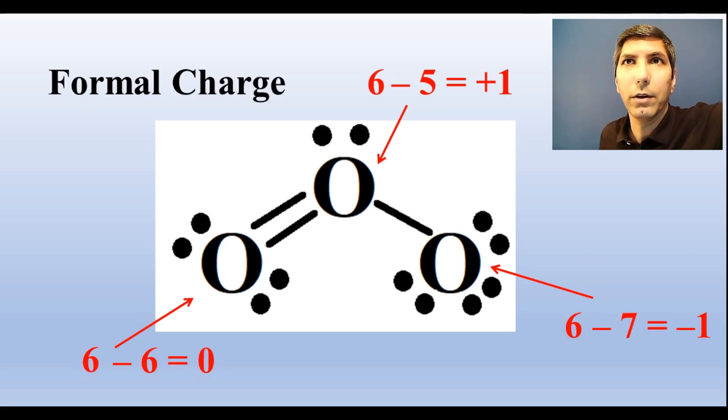The total of the formal charges in a structure should equal the total structure's charge, and it does here in this structure. And usually, but not always, in a neutral molecule, the most stable Lewis electron dot diagram will have every atom with a formal charge of zero. You also need to be able to apply the VSEPR theory.